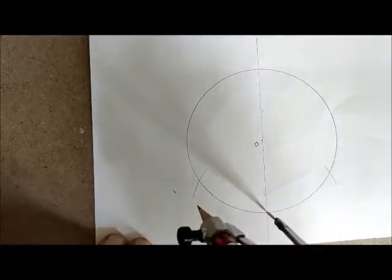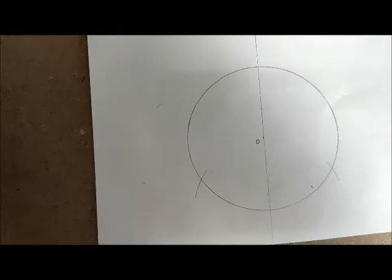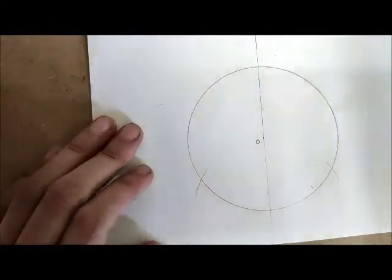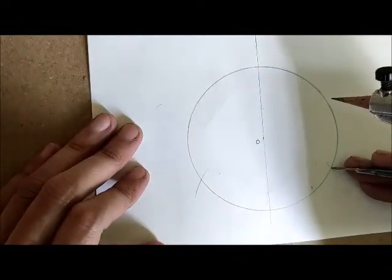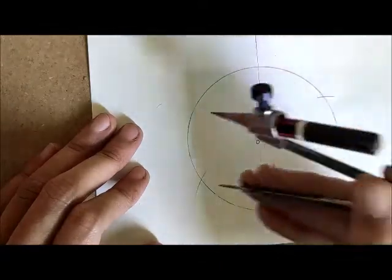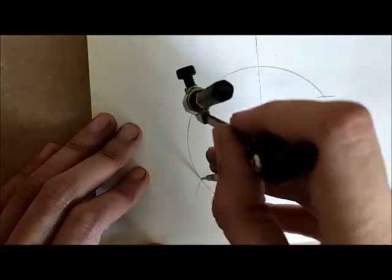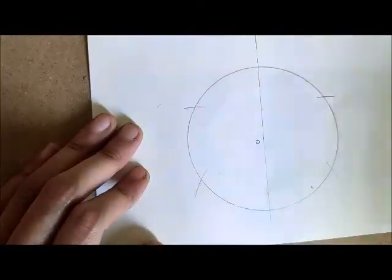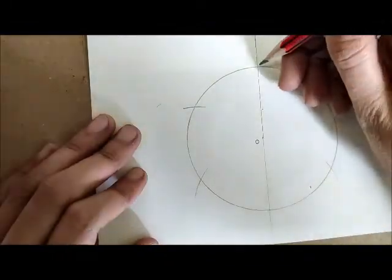Similarly, place the pointer on one of the arcs and draw another arc, and one more. Go on drawing four arcs from one end, so in total we get six intersections on our circle.